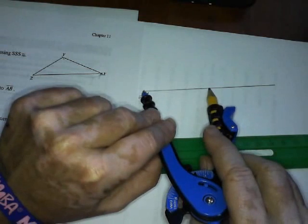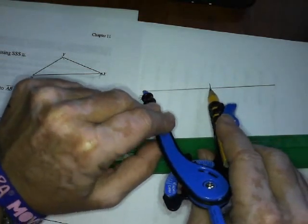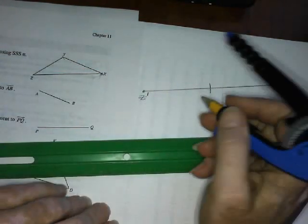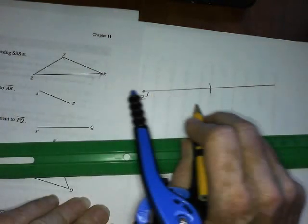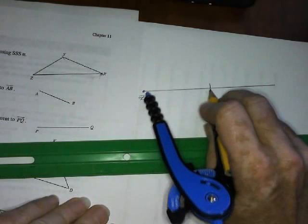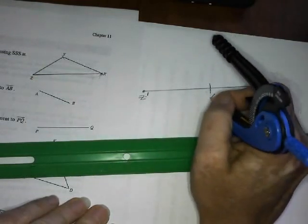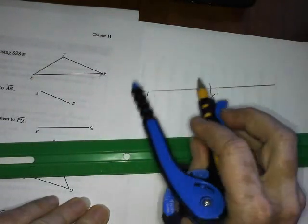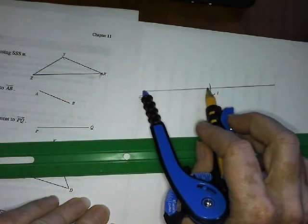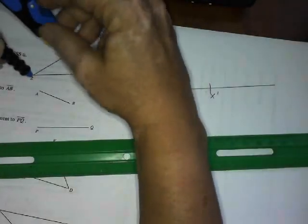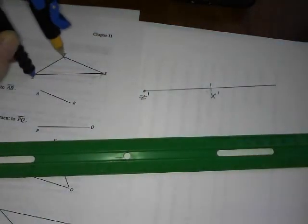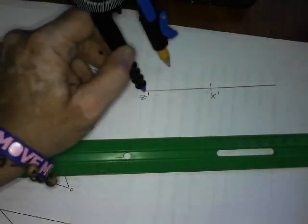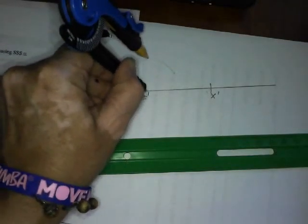And so that pretty much guarantees that this side ZX is congruent with the side Z prime, X prime. So, so far, so good. Well, then it turns out all I have to do is just measure the other two sides. So this side is ZY. And you're thinking, well, how are we going to find the angle? Well, I don't need the angle. I'm just going to make a kind of a large arc here.